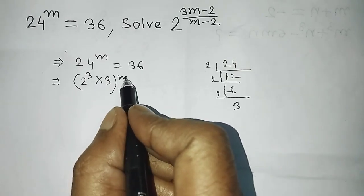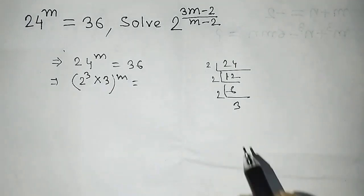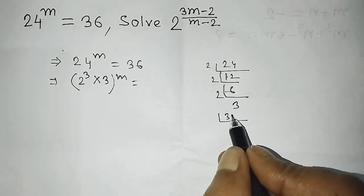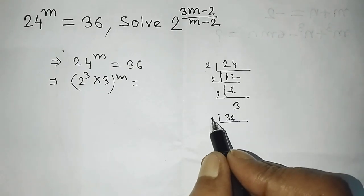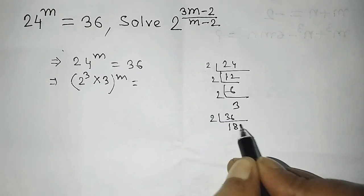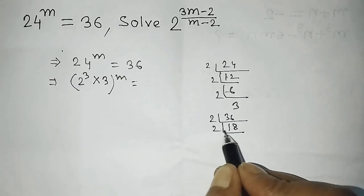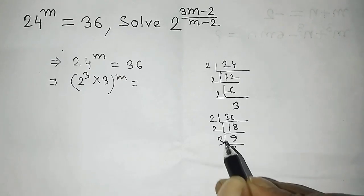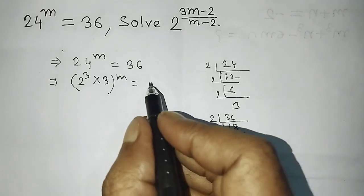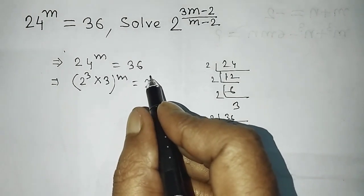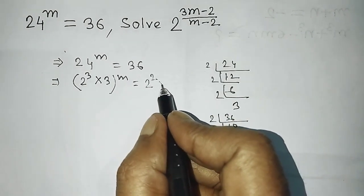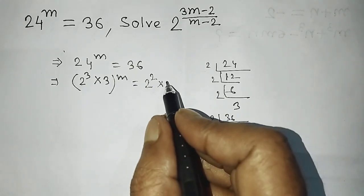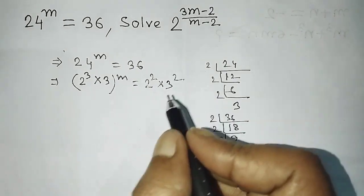Now do the LCM of 36 on the right side. Breaking 36: 2 appears 2 times, so write 2 squared. And 3 appears 2 times, so write 3 squared. So the right side is equal to 2 squared times 3 squared.